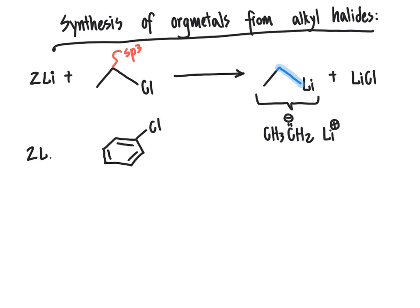So for example, we could take our two group one metal, such as lithium, react it with chlorobenzene, this molecule shown here, which has, you'll notice, an sp2 carbon atom bonded to our chlorine.